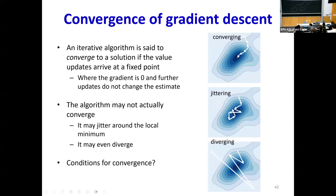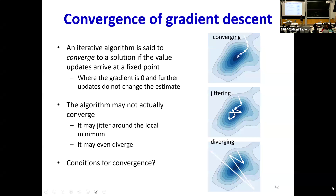You can also have behavior where it goes towards where you want to, but keeps bouncing around — that's jittering. And you can have worse, pathological behavior where instead of going towards the solution, it keeps going further and further away — that's a diverging algorithm. We want to determine whether our gradient descent is going to converge, deter around, or diverge, and what are the conditions for this. For this, we're going to analyze convex functions.